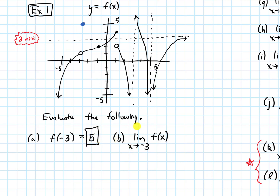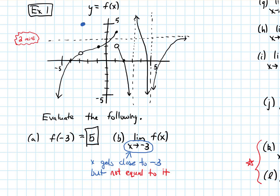Part B is now asking for a limit: what is the limit as x approaches negative 3 of f of x? Recall that this limit notation means that x gets closer and closer to negative 3, but not equal to negative 3. So we don't actually care what's happening exactly at negative 3. As x gets super close to negative 3 from either side, the y values are getting really close to 1. So this limit equals 1.